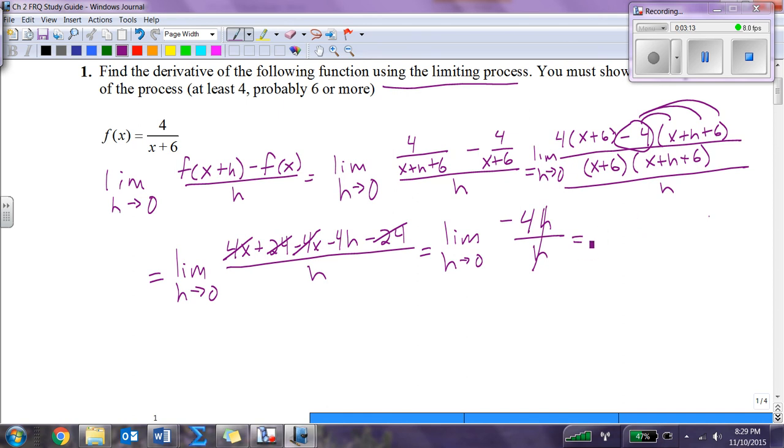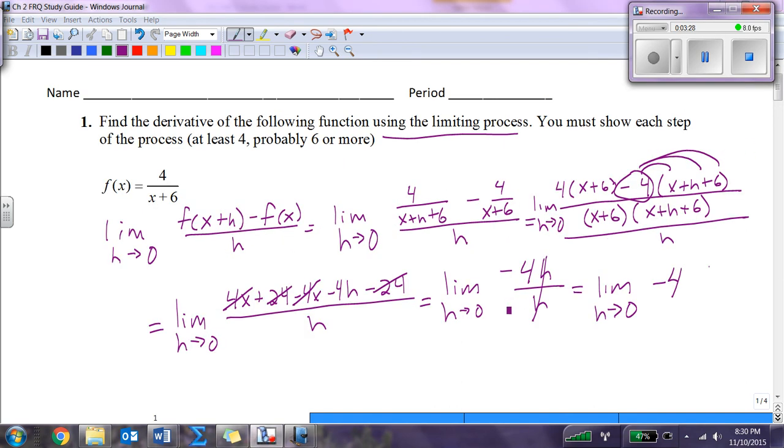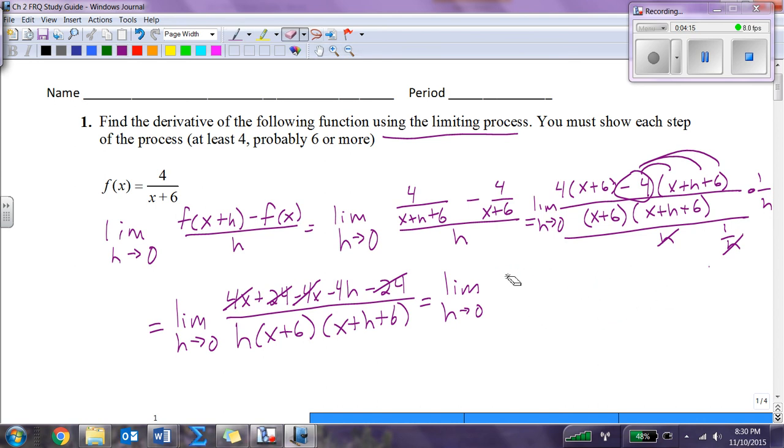Now a bunch of things in the top will add to zero. Positive 24 and negative 24, positive 4x and negative 4x. So now I'm left with the limit as h approaches zero of negative 4h over h. Wait, I forgot that's not over h. This has actually still got that denominator.